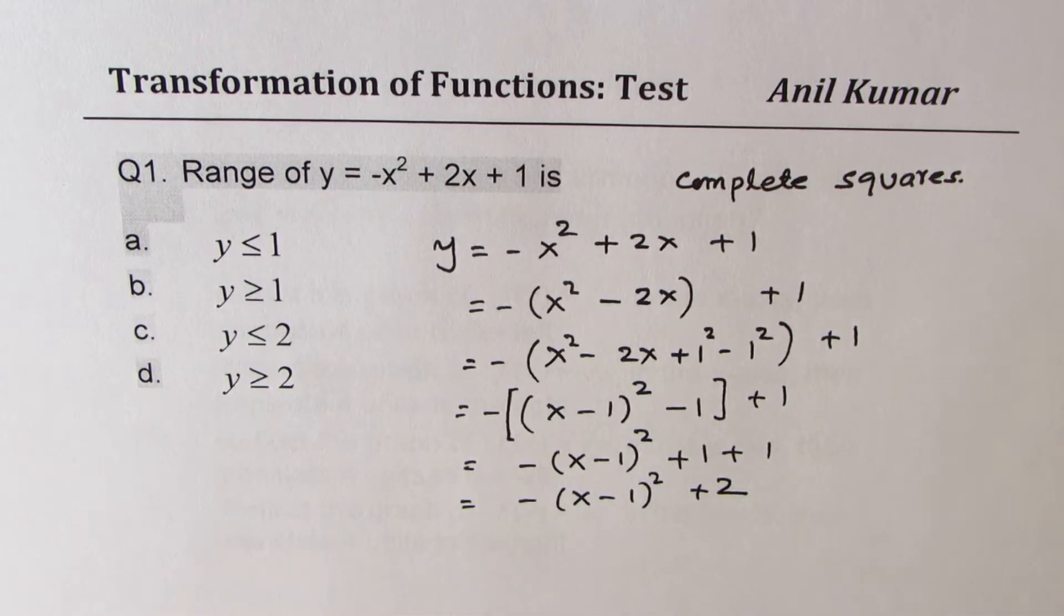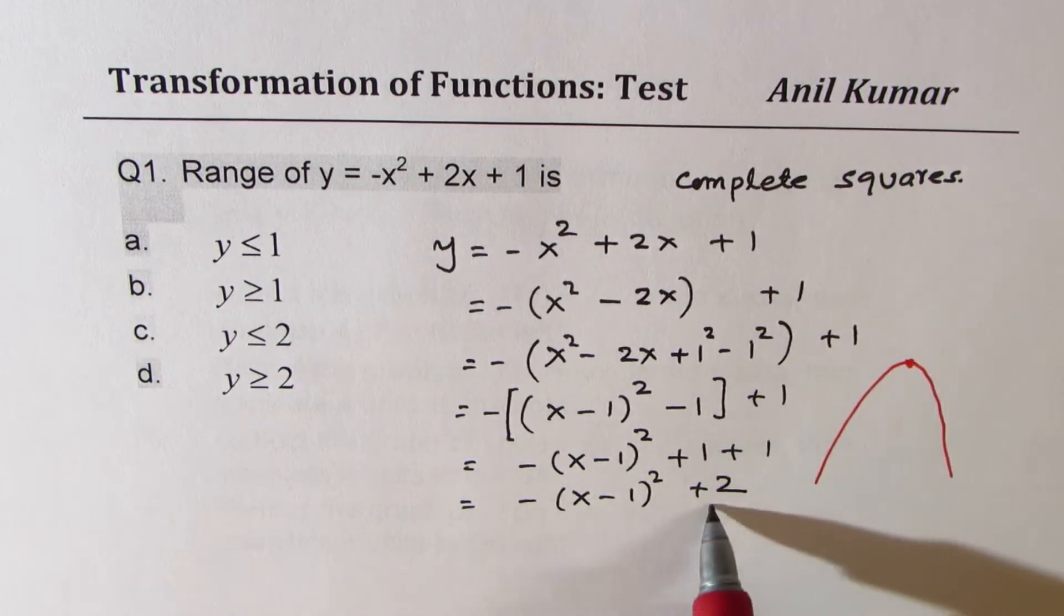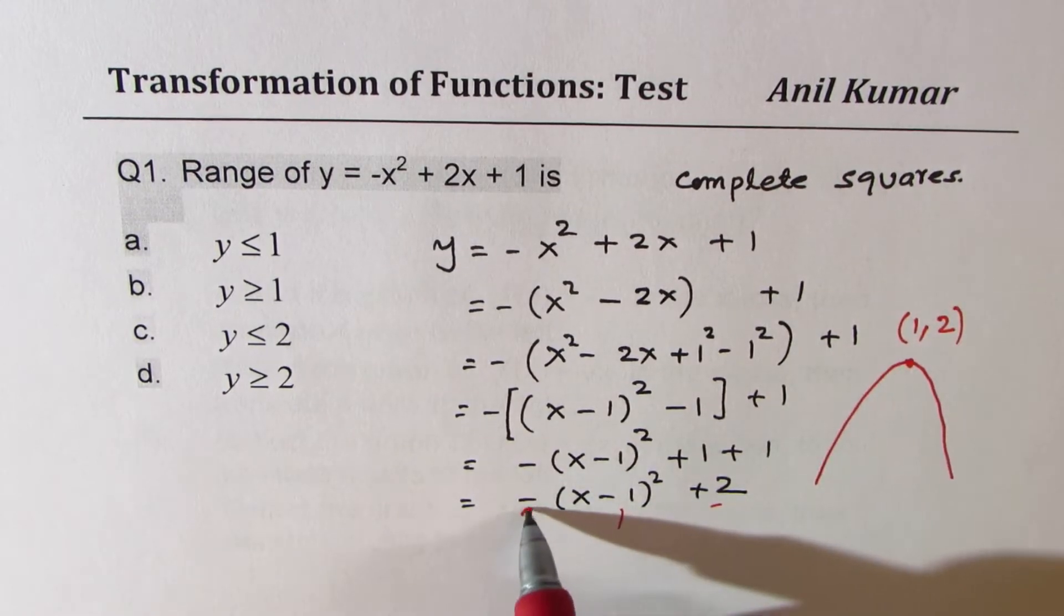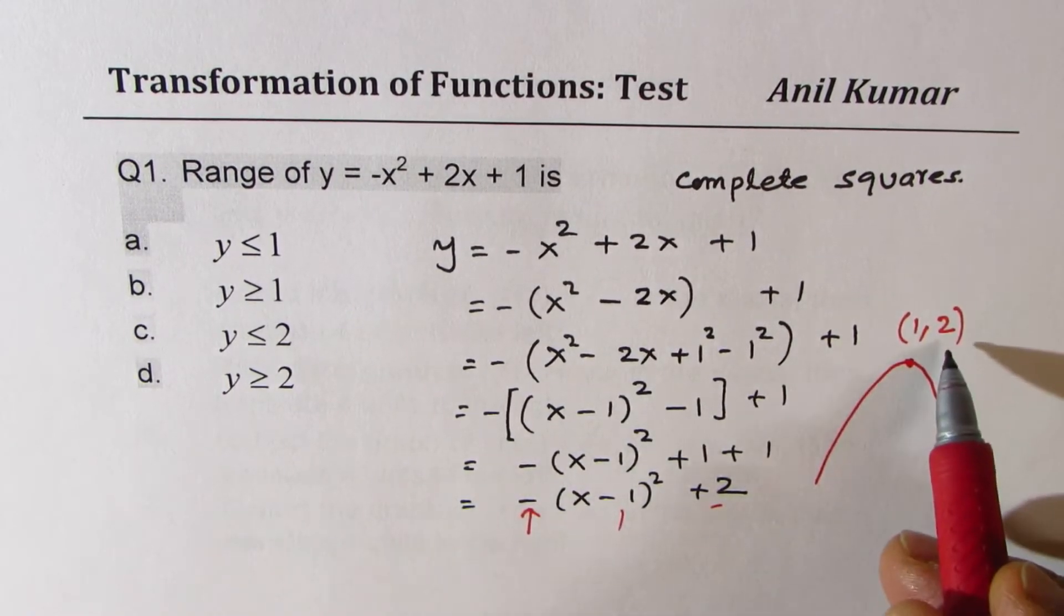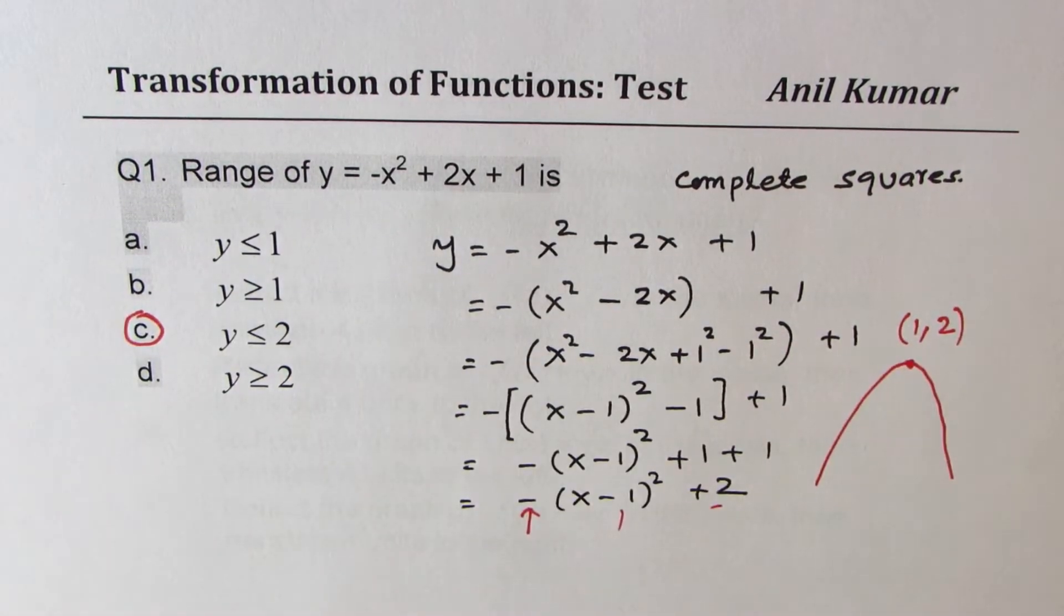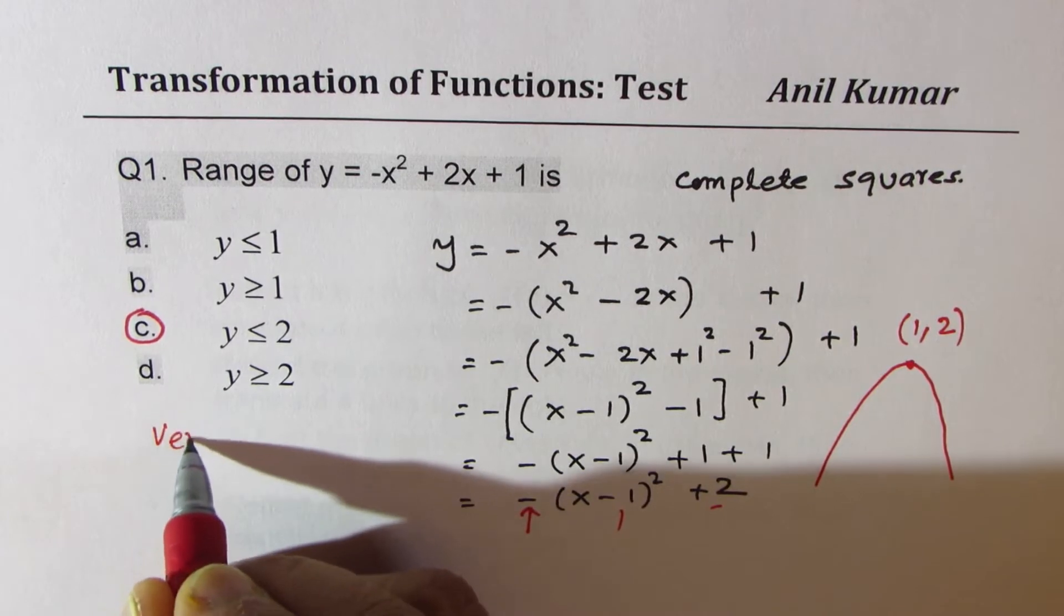So clearly, there is a parabola which is opening downwards. And the vertex is at 1 and 2. So this negative means downwards. So y is less than or equal to 2, which is option c. So that is how you're going to get this particular solution. Go through this once again. Whenever you're given standard form of quadratic equation, do complete the squares. Get the vertex form. And only then you have the correct answer.